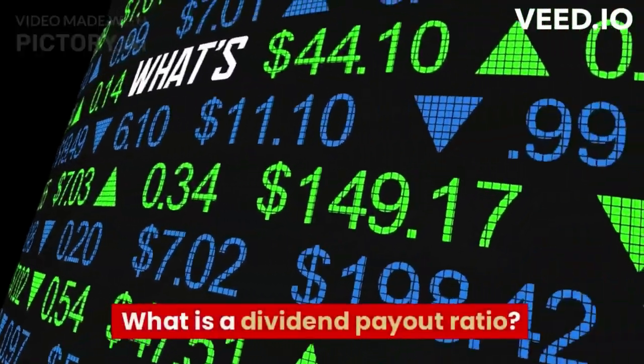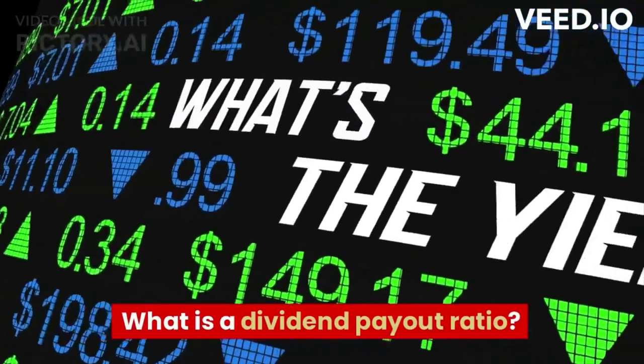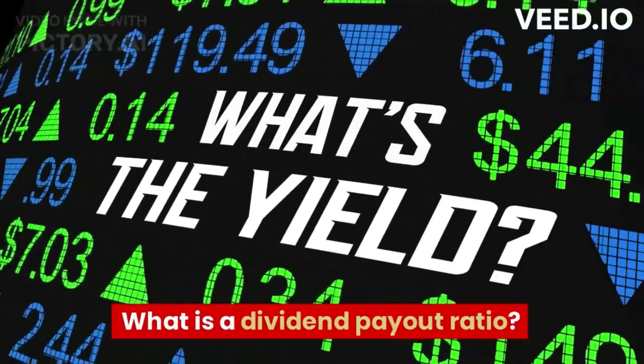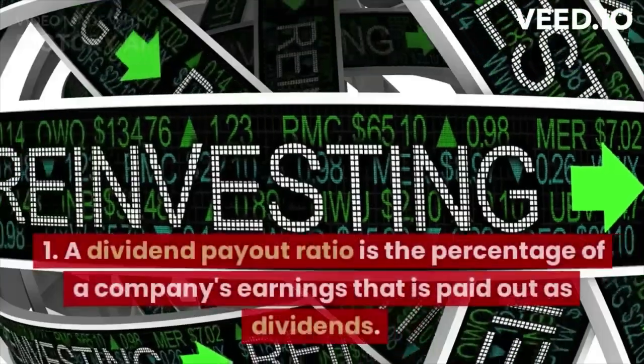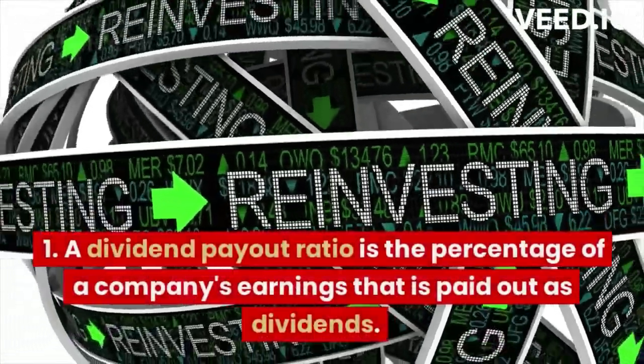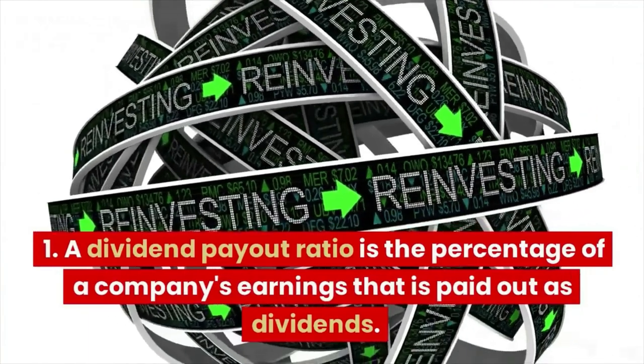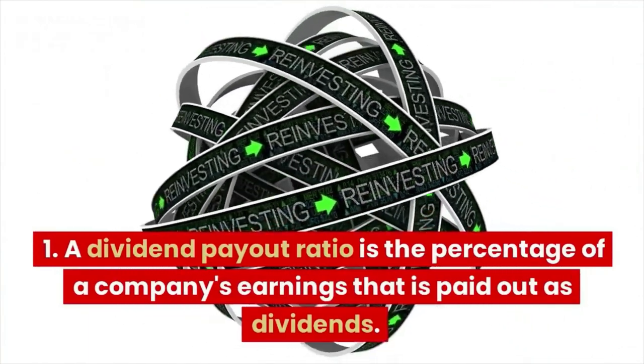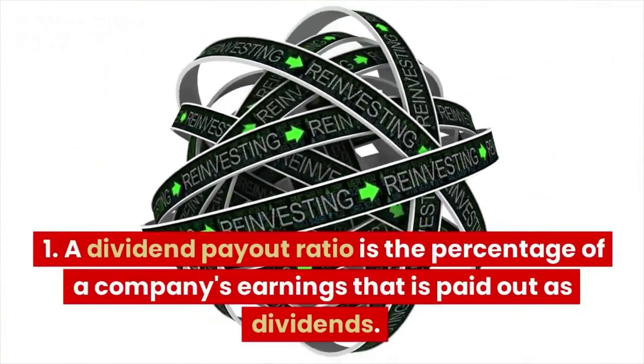What is a dividend payout ratio? A dividend payout ratio is the percentage of a company's earnings that is paid out as dividends.